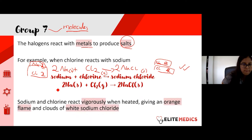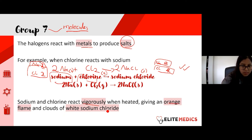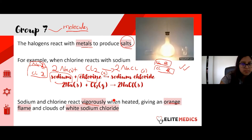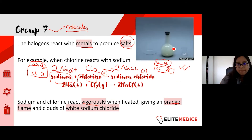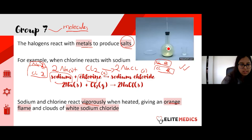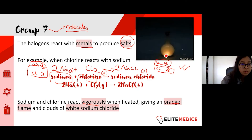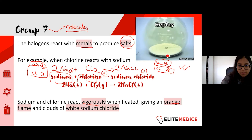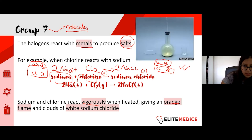When you react sodium and chlorine together they react vigorously — you'll see an orange flame and clouds of white sodium chloride being produced. It's a very reactive reaction. This animation shows sodium as a solid in the bottom, chlorine gas added, and then a bright orange flame appearing.